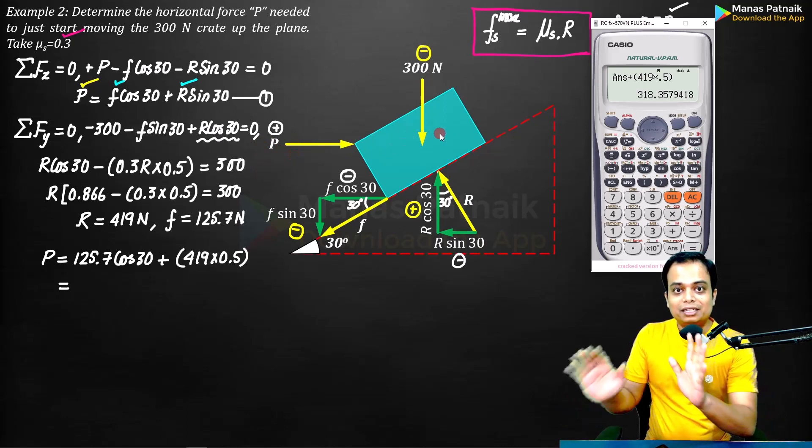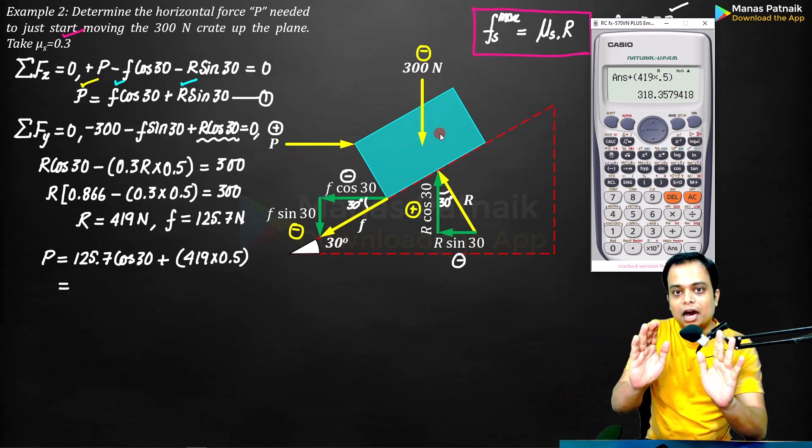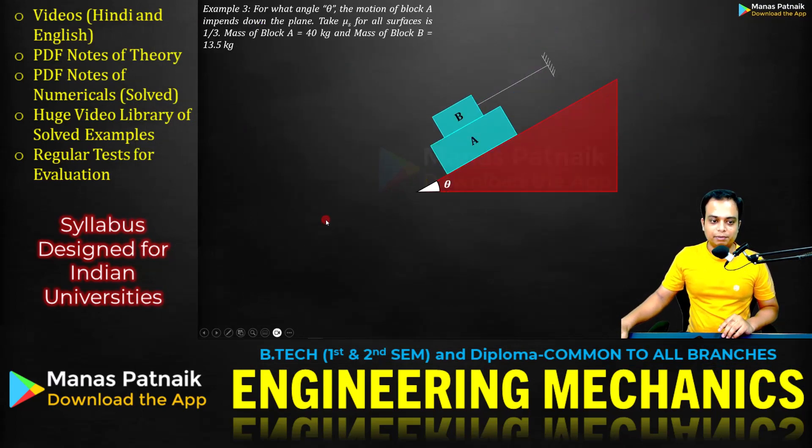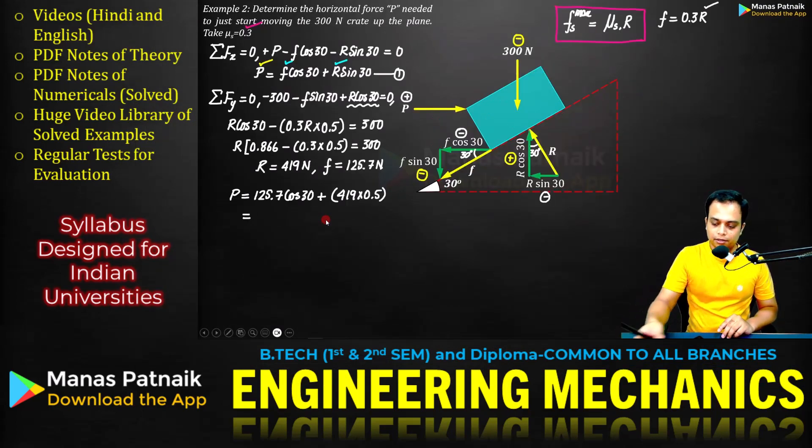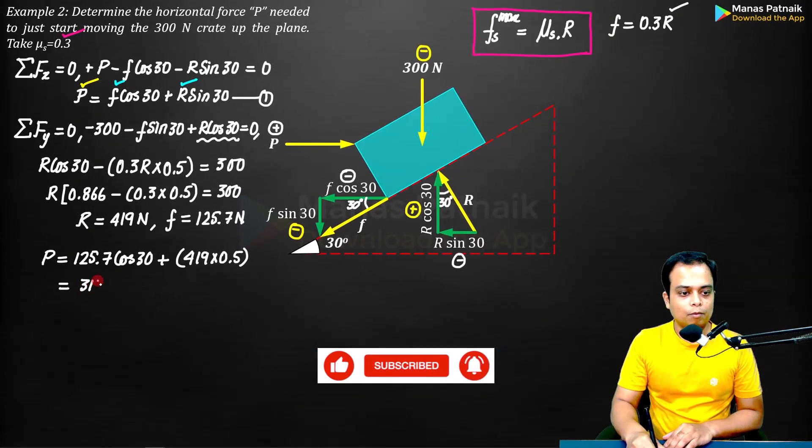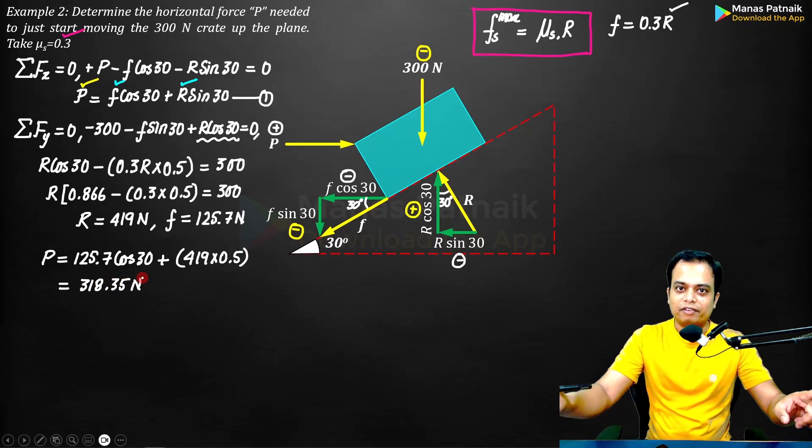So that the block just starts to move up the plane. Just starts to move up the plane. So the answer is 318.35 Newtons. That's the final answer.